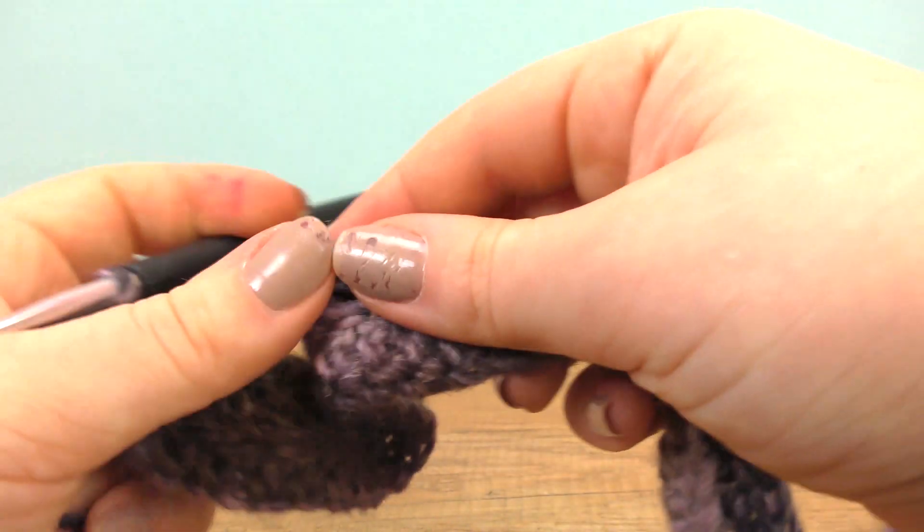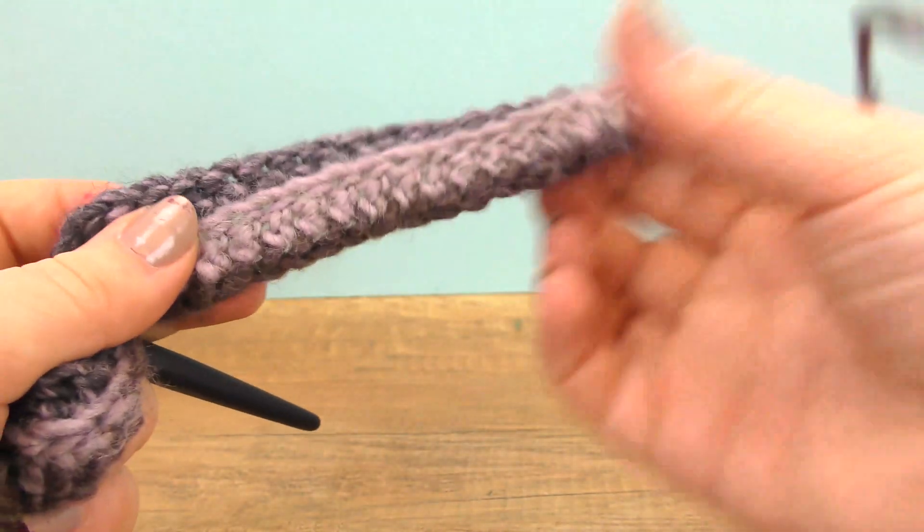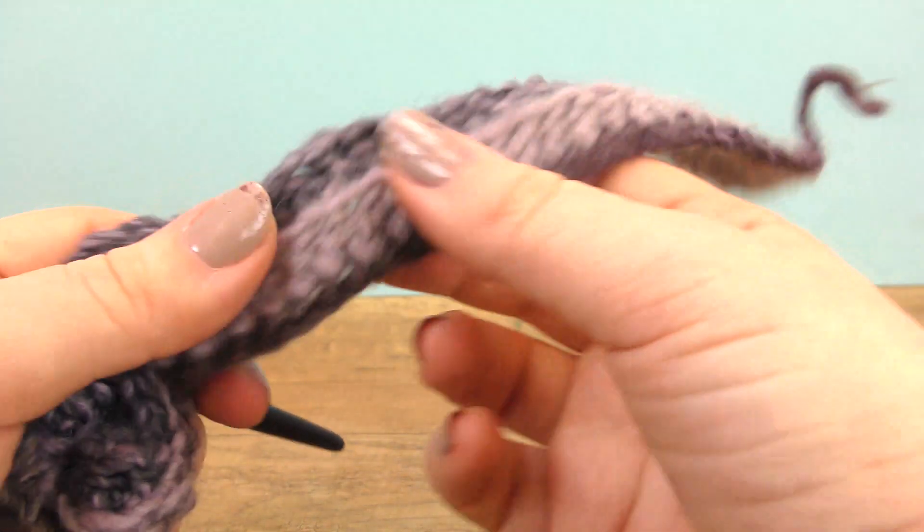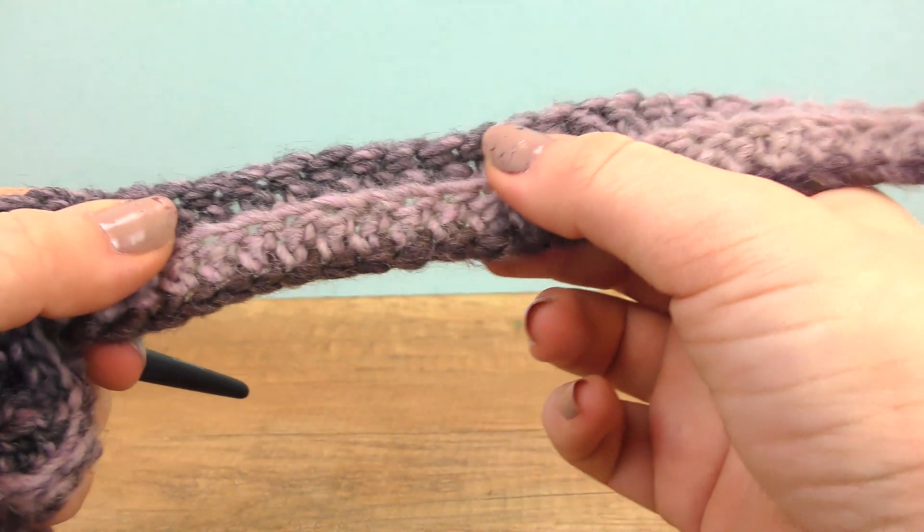Here is our headband now. Since we went into the back section of each stitch, we get this subtle line between the two rows and I think it looks super pretty.